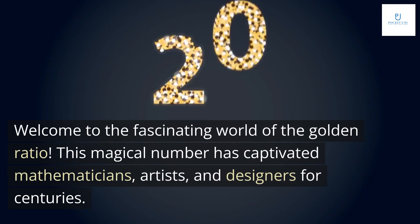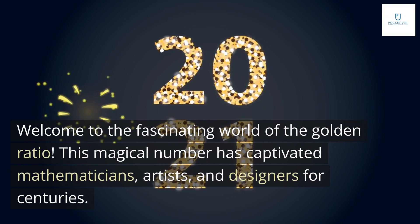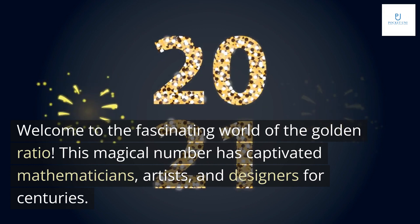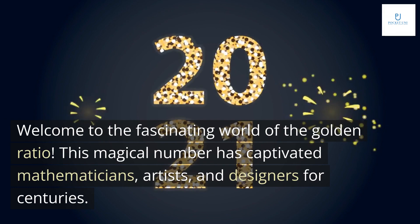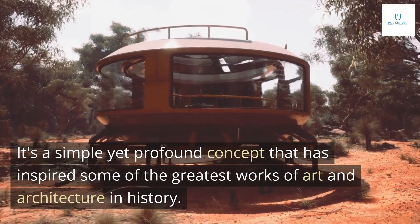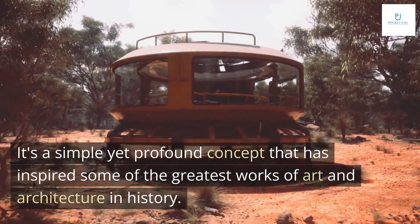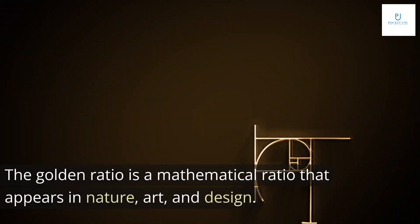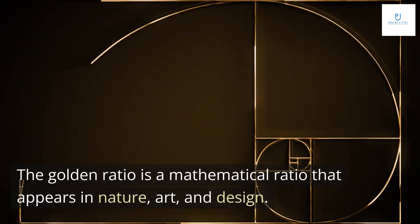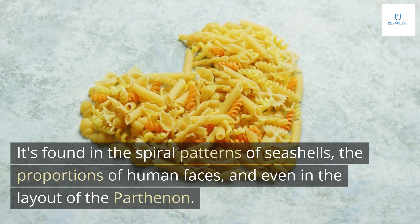Welcome to the fascinating world of the golden ratio. This magical number has captivated mathematicians, artists, and designers for centuries. It's a simple yet profound concept that has inspired some of the greatest works of art and architecture in history. The golden ratio is a mathematical ratio that appears in nature, art, and design, found in the spiral patterns of seashells.